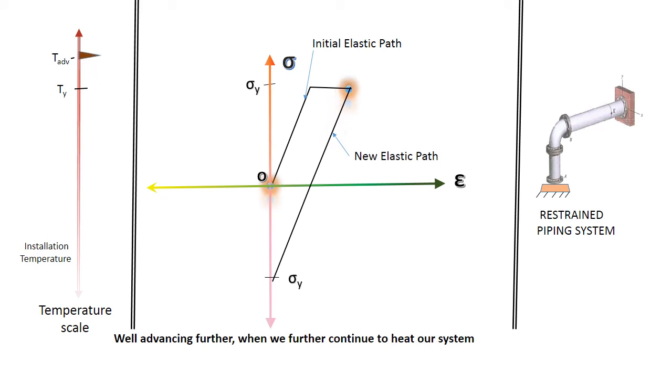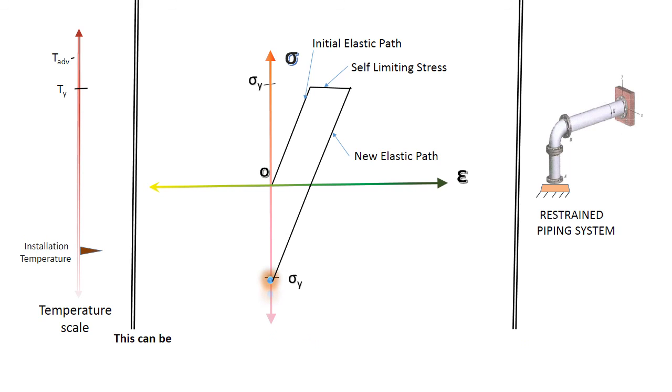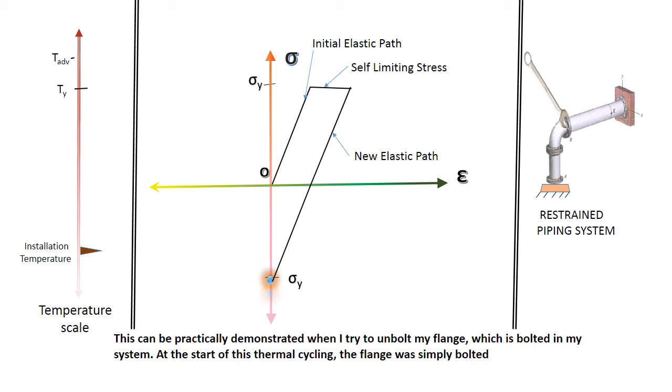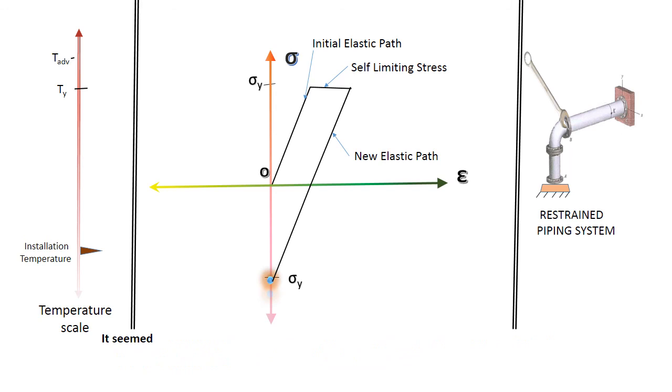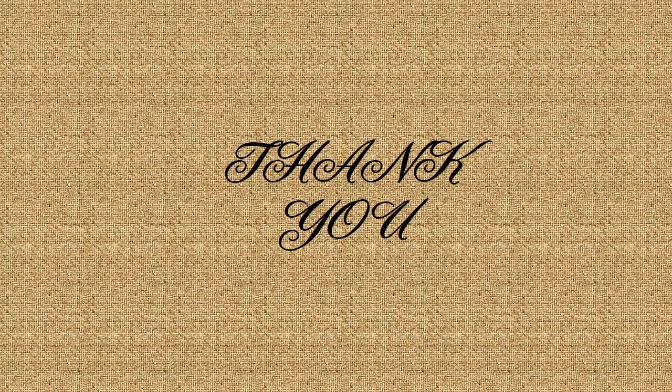While advancing further, when we further continue to heat our system till position where it is stressed to amount equal to sum of the yield strength at cold condition and hot condition, it acquires significant compressive stress when cooled down to the insulation temperature. This can be practically demonstrated when I try to unbolt my flange which is bolted in my system. At the start of the thermal cycling the flange was simply bolted without any strain in it. Now as I unbolt, the flange seems to fly out of the system. It seemed to self-spring from the attached piping after unbolting as the connected piping had accumulated compressive stress at installation temperature though the strain was zero. Also the gap got created between the flanges when the line was disconnected. So this ends with the elastic shakedown. Thank you.